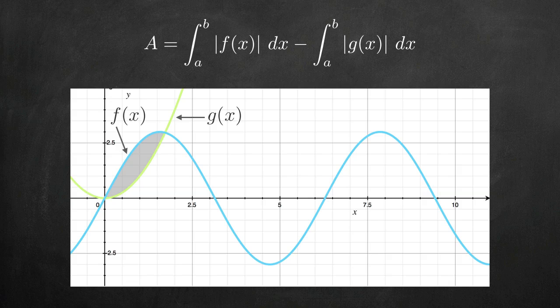Then we can see that we're finding the area under f, all the way to the x-axis, and subtracting from that the area under g all the way to the x-axis. When we do that, we're just left with the area between the curves, this portion right here.